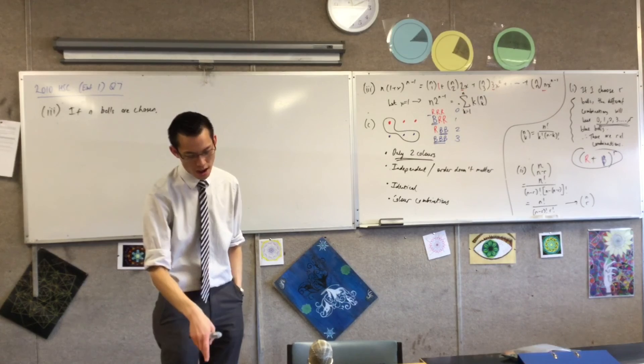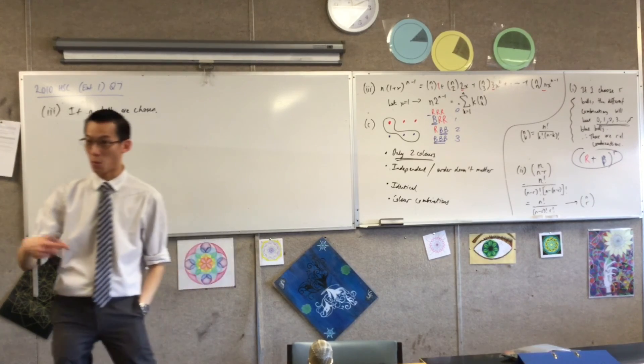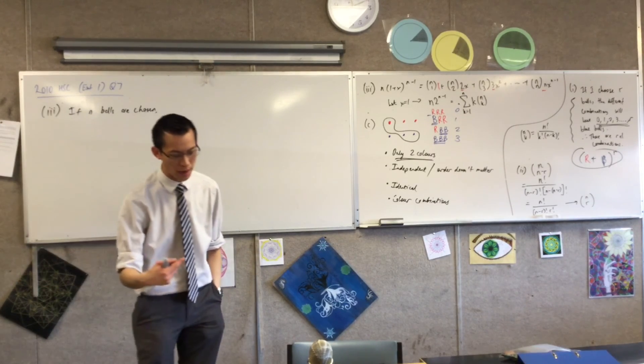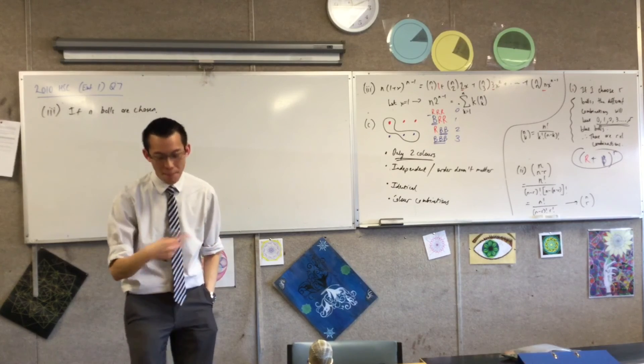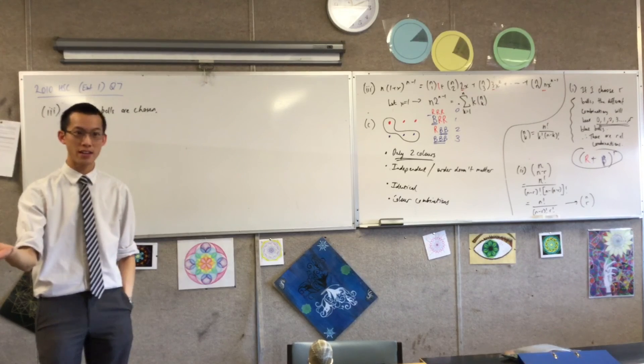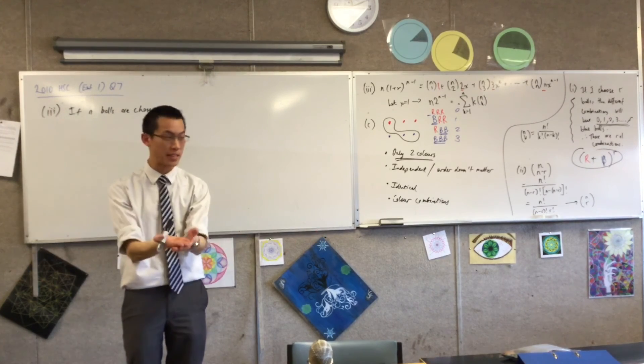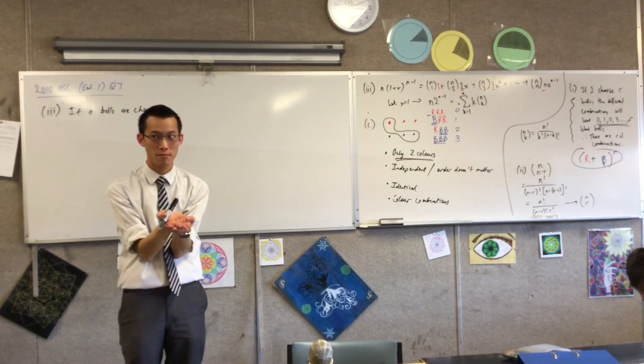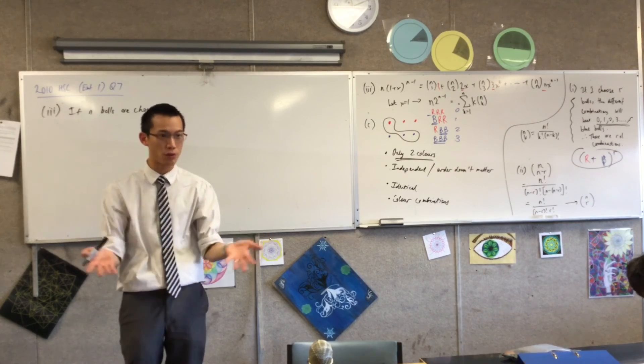It says n minus r balls are white. Have a look at part one. r balls are blue-red. If you take that many blue-red and that many white, you put them together and you'll have n in total. Does that make sense?